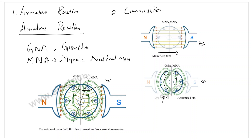The armature reaction will weaken the main flux. The induced voltage in case of a DC generator will be reduced. We know that E = VBL where B is actually phi times A. So if the flux is distorted and weakened, the induced EMF or generated voltage from a DC generator will also be reduced.